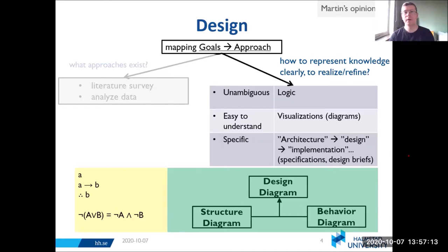To do that, we want the representation to be three things: unambiguous, easy to understand, and specific. To make it unambiguous, you can use computational logic.